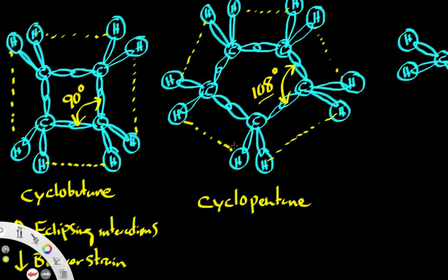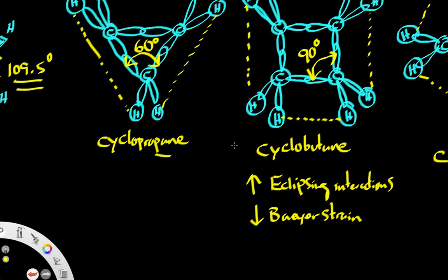These rings respond to the two stresses — Baeyer strain and torsional strain from eclipsing interactions — by a process called puckering. Puckering basically means the ring is not in a single plane; the bonds actually move up and down relative to one another to minimize stress and ultimately decrease the energy level by stabilizing the molecule. Let's see how puckering affects these three different molecules.